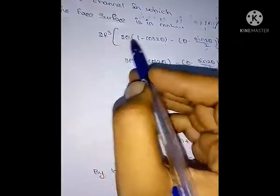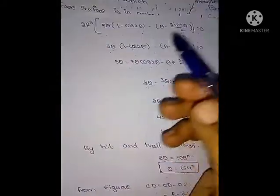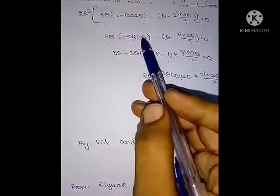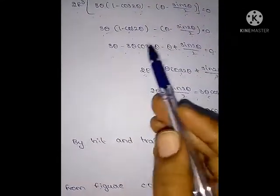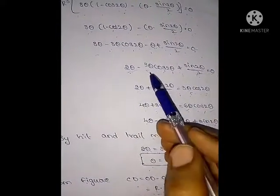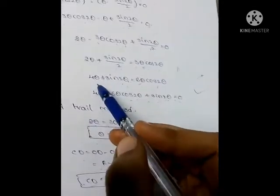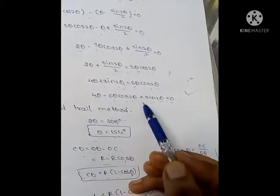Expanding: 3θ − 3θcos2θ − θ + sin2θ/2 = 0, which simplifies to 2θ − 3θcos2θ + sin2θ/2 = 0. Taking LCM of 2: 4θ + sin2θ = 6θcos2θ. Rearranging gives 4θ − 6θcos2θ + sin2θ = 0.